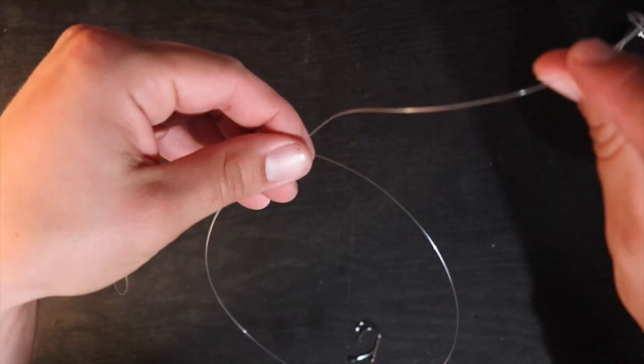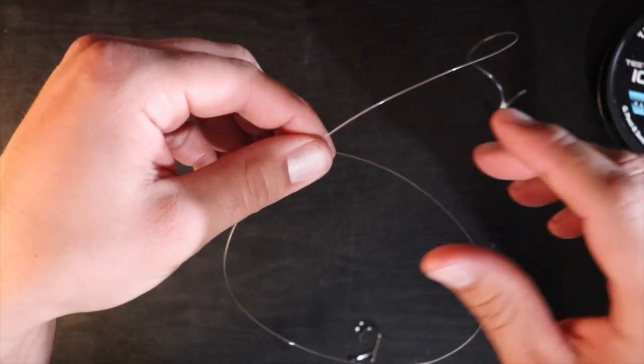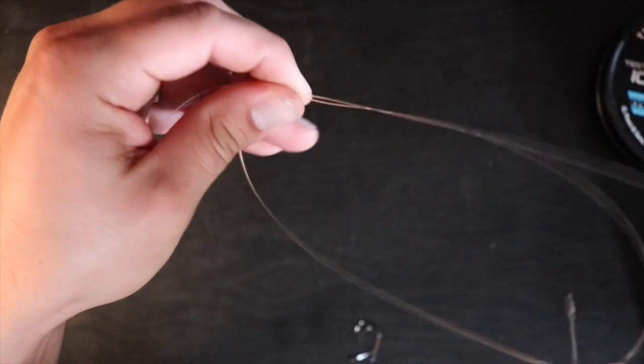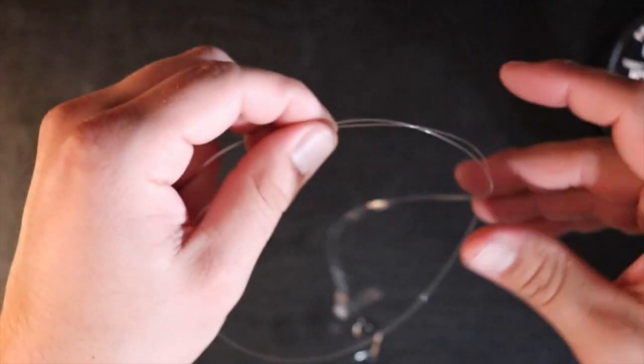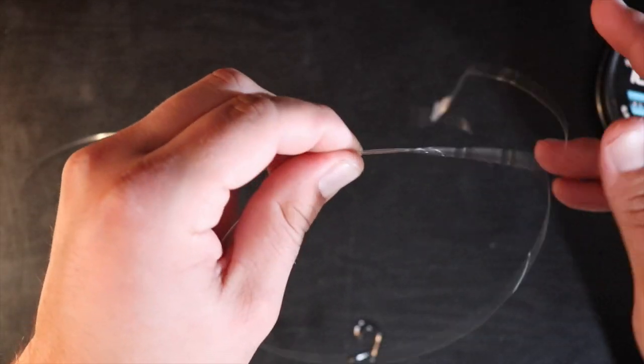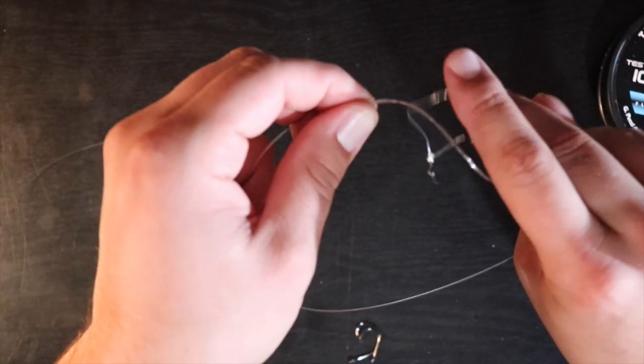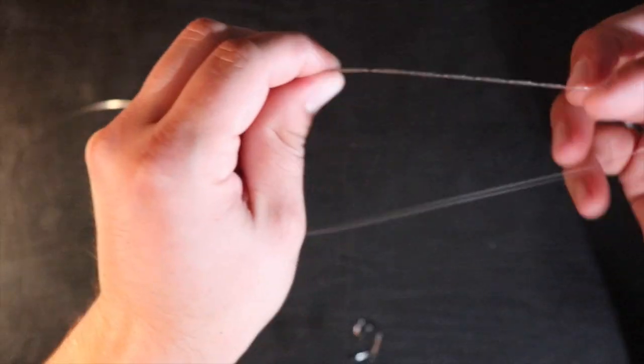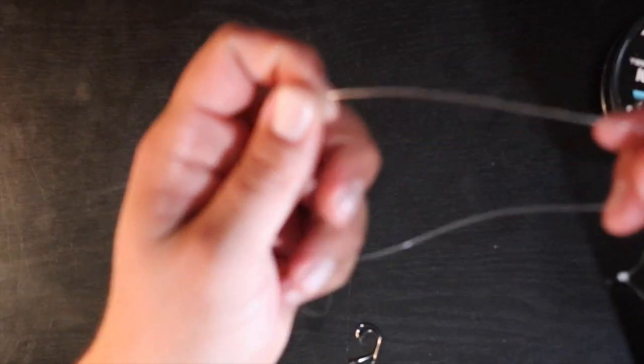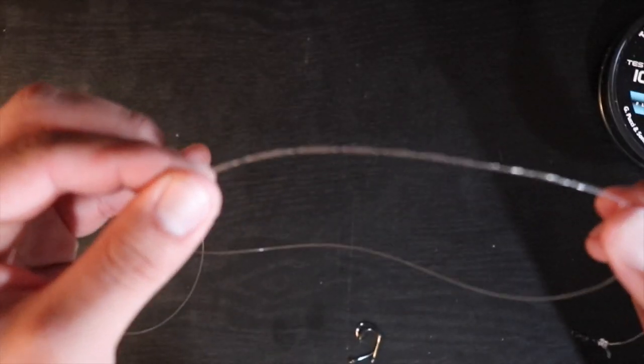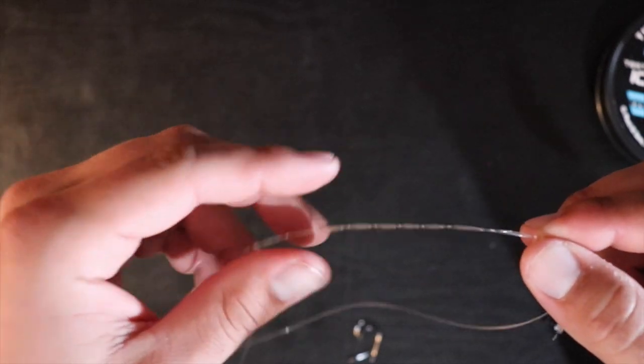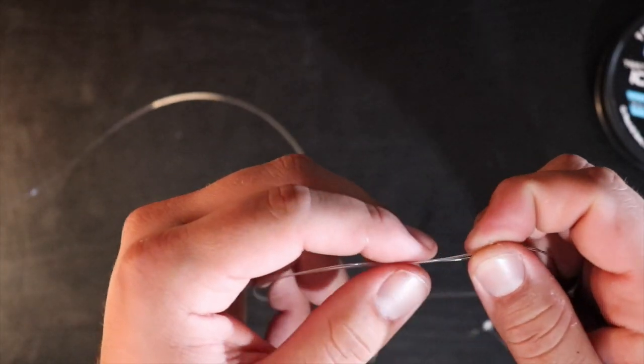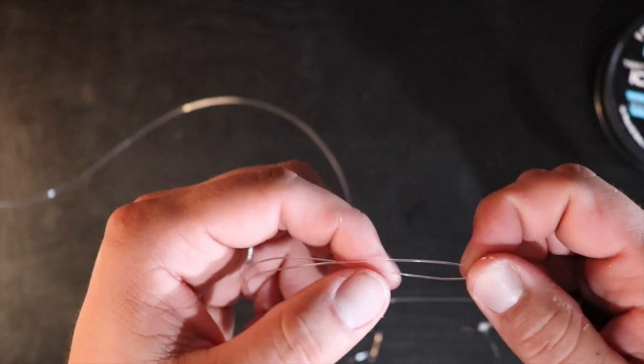Now, so once you have this first loop here, again this end is over top, and then I'm going to loop it under and through one, two, three, four, five, six. So you want to go really at least five, six times or so, and that's going to create a bunch of little loops right there. We're going to pick somewhere right in the middle, separate those two ends apart like so.